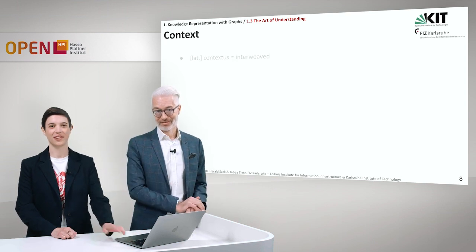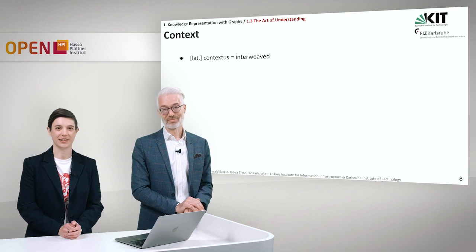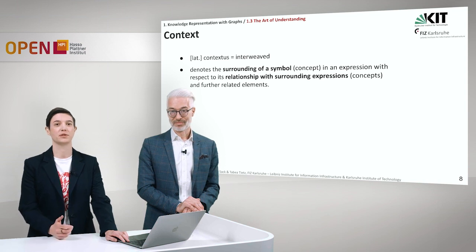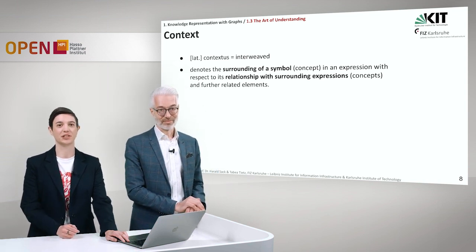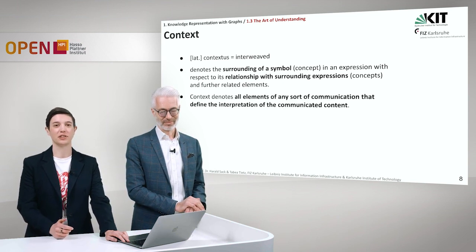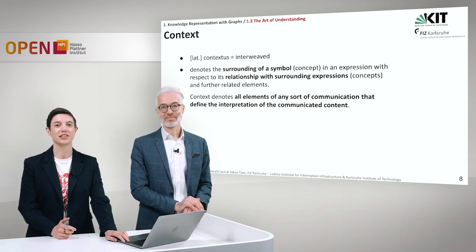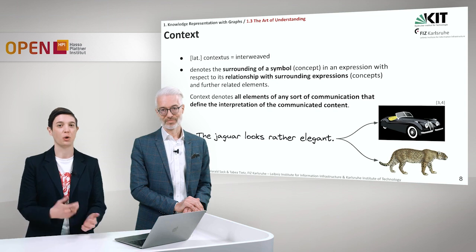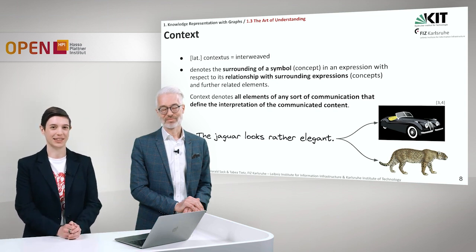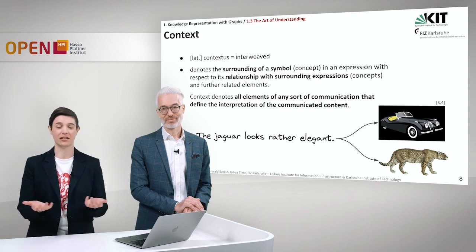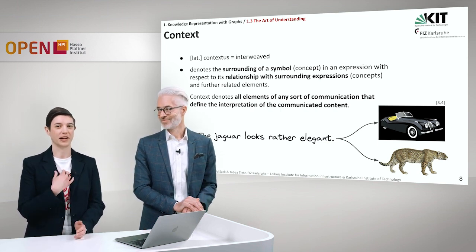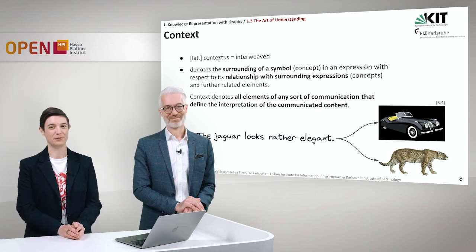So let's go on with context. Context comes from the Latin word contextus and means interweaved. It denotes the surrounding of a symbol in an expression with respect to its relationship with surrounding expressions and further related elements. Context denotes all elements of any sort of communication that define the interpretation of the communicated content. For example, if Harald and I are in the jungle and Harald says, 'Tabea, this jaguar looks rather elegant,' I already know I can be scared because he's probably talking about the animal and not the car.